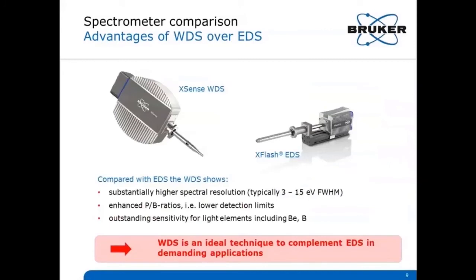As WDS and EDS actually measure the same physical property, it is important to realize that there are some main differences between the two techniques. First, a substantially higher spectral resolution of WDS compared with EDS — typical values are in the 3 to 15 electron volt range, meaning 10 to 20 times better than EDS. Second, enhanced peak-to-background ratios, which translates into lower limits of detection, up to about 100 ppm.